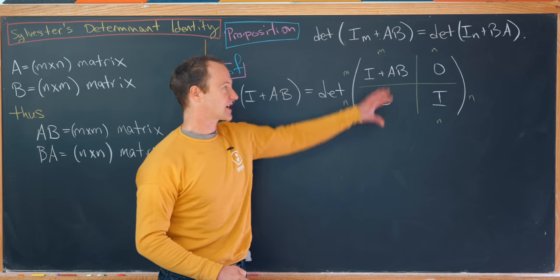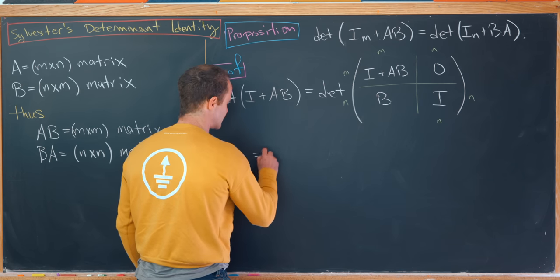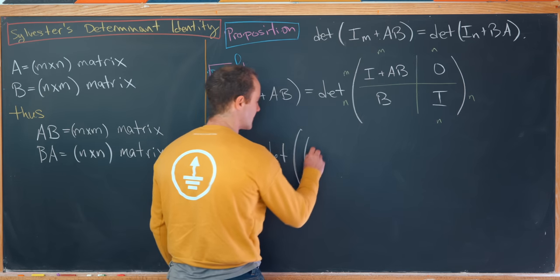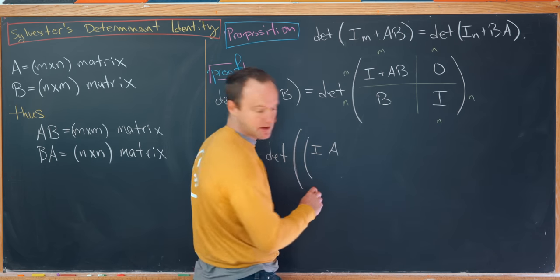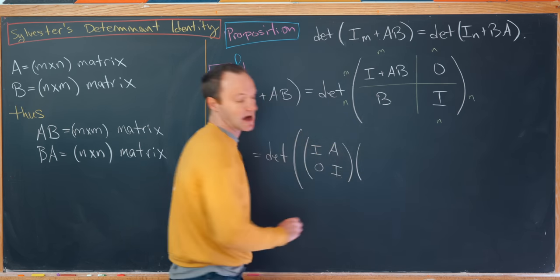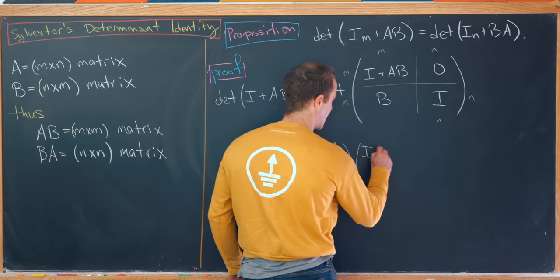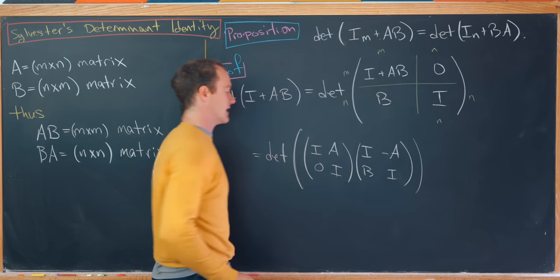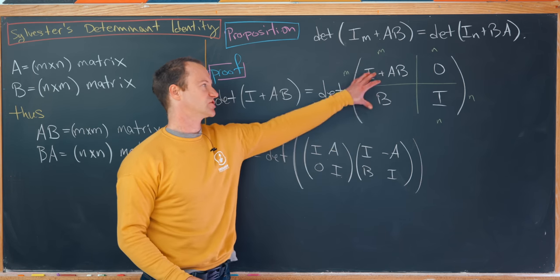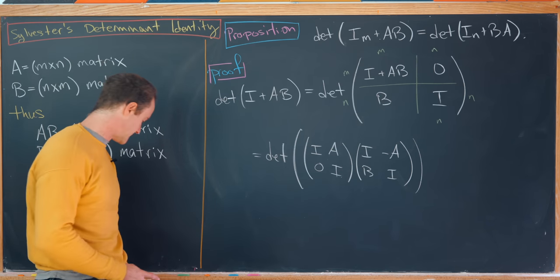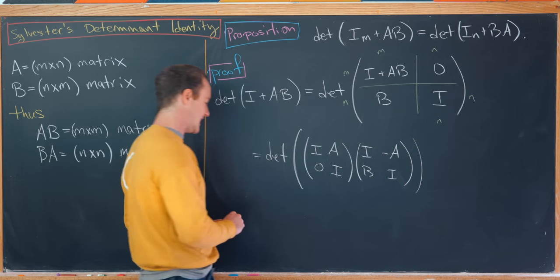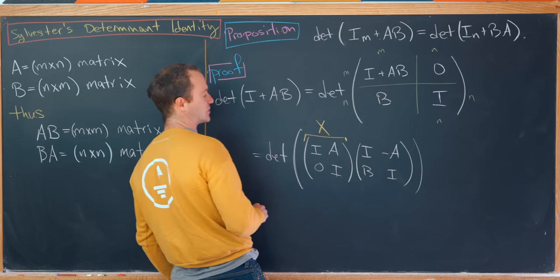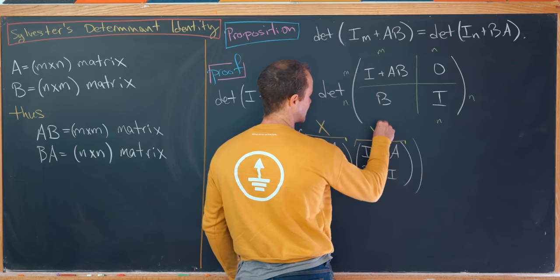Next up, we'd factor this block matrix, and that factors as follows: I and minus A, and then B times I. Notice if we multiply these two block matrices, we end up with what's above. Now I'm going to introduce a little notation for the next couple steps just to make everything work easier. Let's call this block matrix X, and we'll call this block matrix here Y.